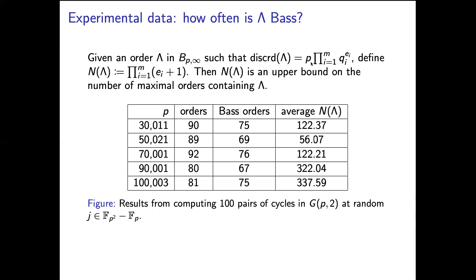which is an upper bound on the number of maximal orders containing Λ. So it's defined like this. If the reduced discriminant factors this way where the q_i are not equal to p, then n(Λ) is this product of e_i + 1. So one can show that this is an upper bound on the number of maximal orders containing Λ. And we reported the average value of this here. So we can see that this seems to be on average a small number.